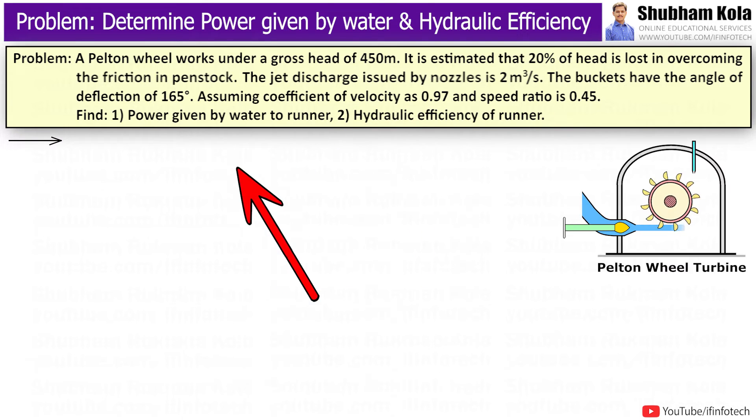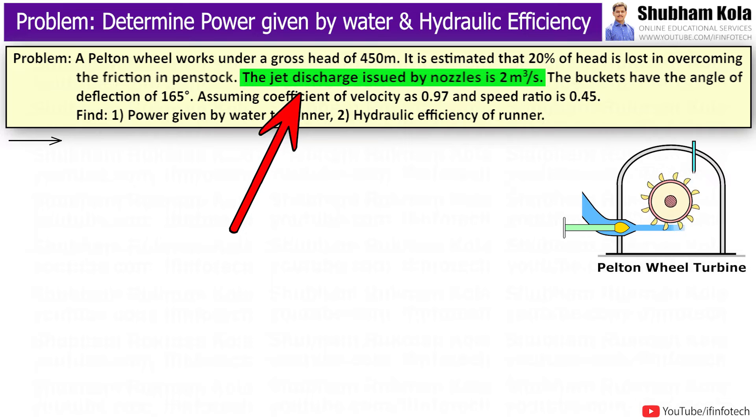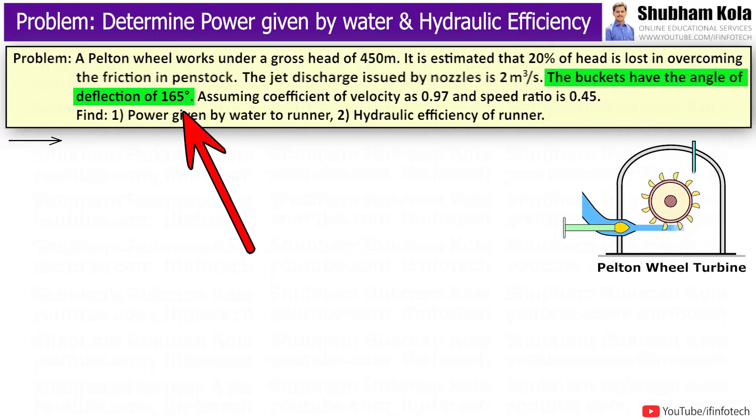So here the statement is: a Pelton wheel works under a gross head of 450 meters. It is estimated that 20% of head is lost in overcoming the friction in penstock. The jet discharge issued by nozzle is 2 m³ per second. The buckets have the angle of deflection of 165 degrees.